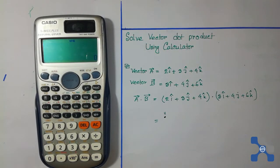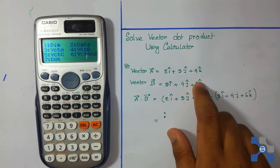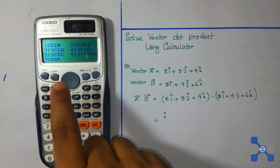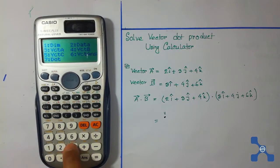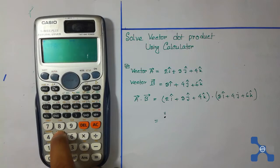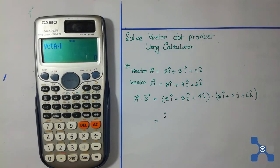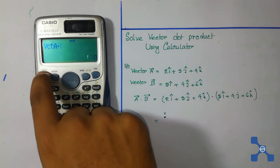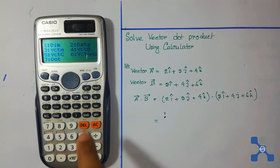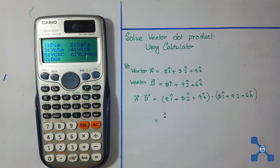Press shift and then press 5 again. We see that 7 is for dot product, so press 7. Then press shift 5 again, and we see that 7 is for dot. Then press 4 to select vector B, and press 4 again. Then press the equal button.